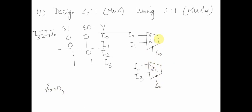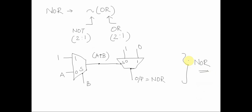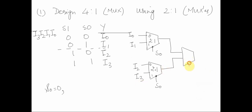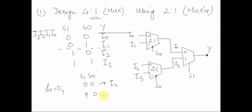When S0 is 0, I0 and I2 enter the first-stage MUXes. Depending upon S1: if S1 is 0, I0 is transferred to the output — so S0=0, S1=0 gives I0 as output. If S0=0 and S1=1, I2 is transferred to the output.